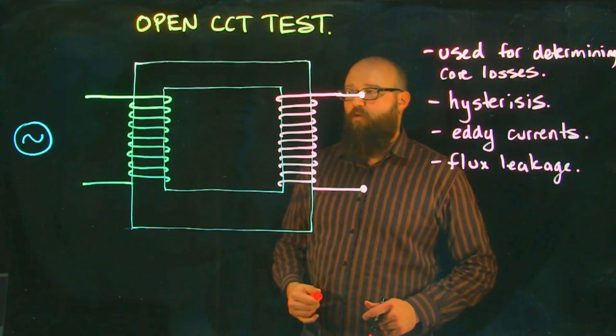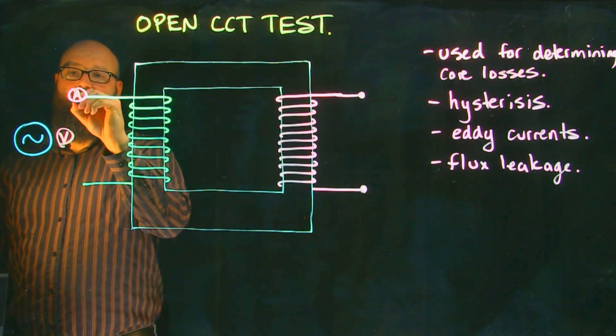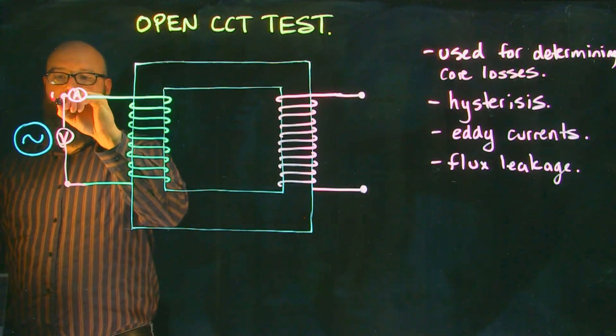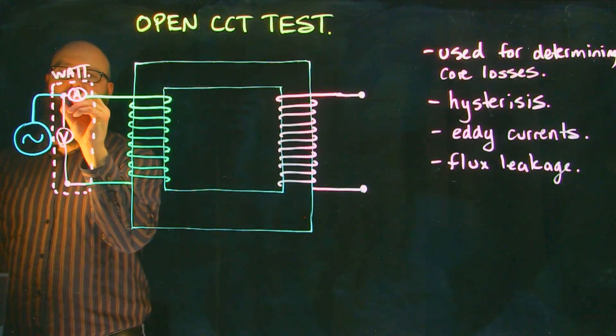Now before we put this onto our applied voltage, we want to put a wattmeter in here. A wattmeter is simply an ammeter and voltmeter combined. The ammeter is connected in series and the voltmeter is connected in parallel, but it's kind of all one thing. And to finish that off, we're going to connect this up to our circuit.